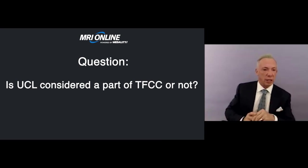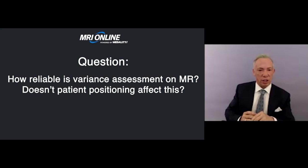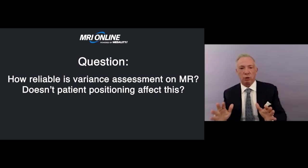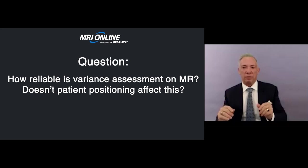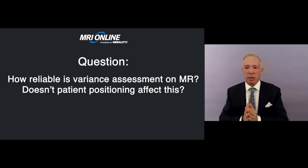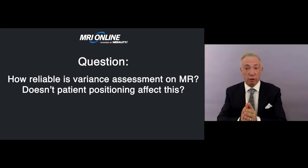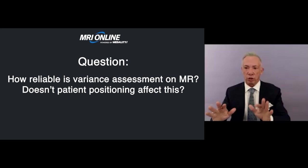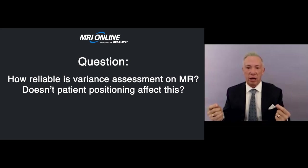Regarding how reliable ulnar variance assessment is on MRI — patient positioning absolutely affects this. In my slides I didn't say 'ulnar variance positive,' I said 'positive variance posture,' because hand surgeons are detail-oriented and very specific about how they want variance measured on conventional radiography. That is why I use the term posture. However, you have an obligation to use a little common sense.